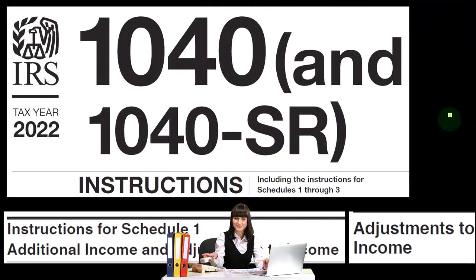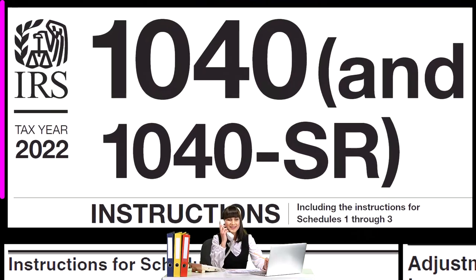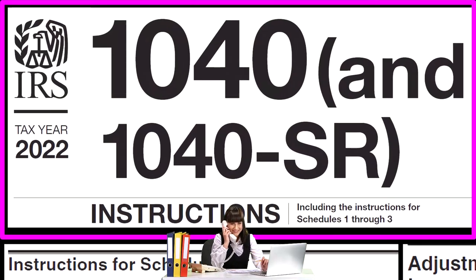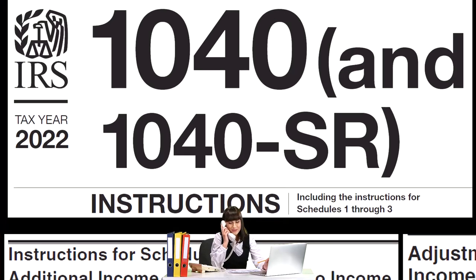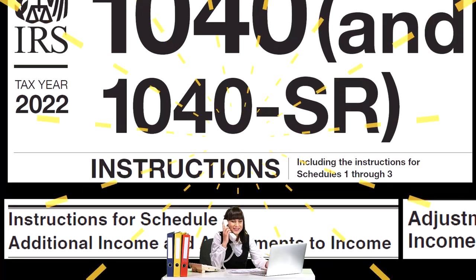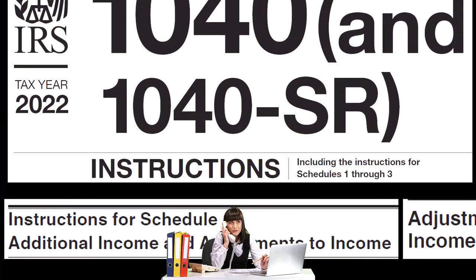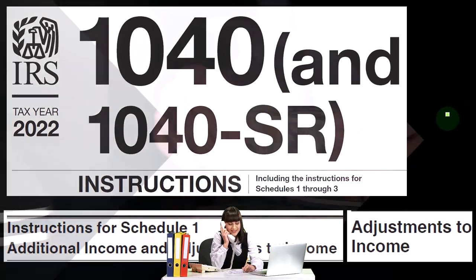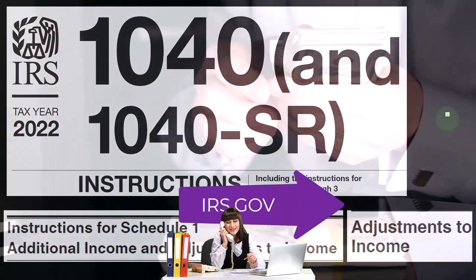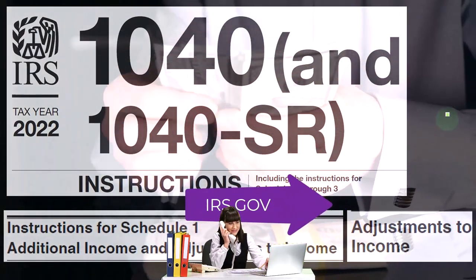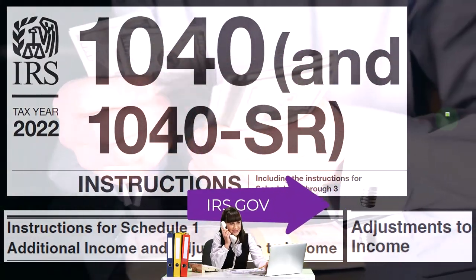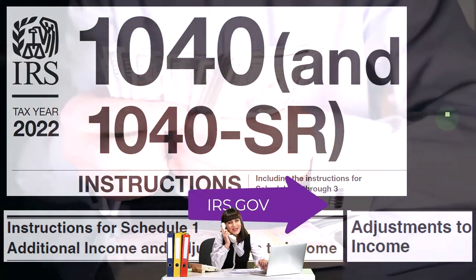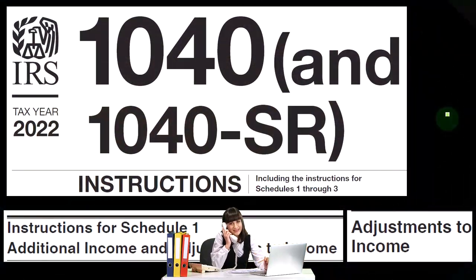Most of this information comes from the Form 1040 Tax Year 2022 Instructions, Instructions for Schedule 1, Additional Income and Adjustments to Income, specifically the Adjustments to Income section, which you can find at the IRS website, irs.gov.